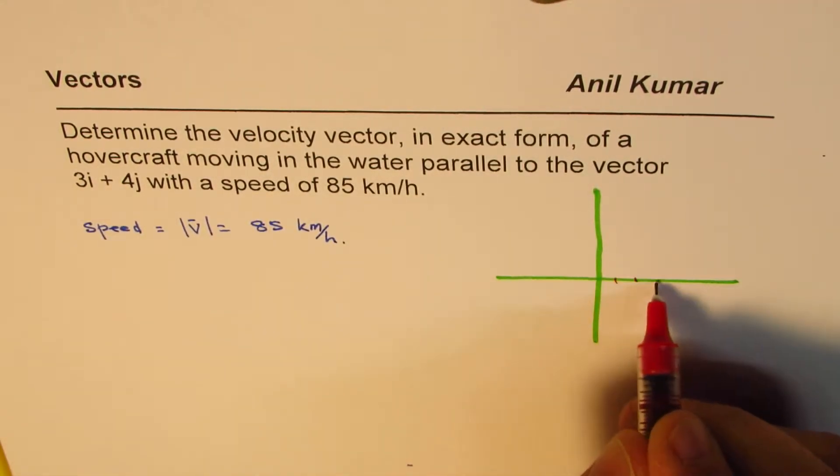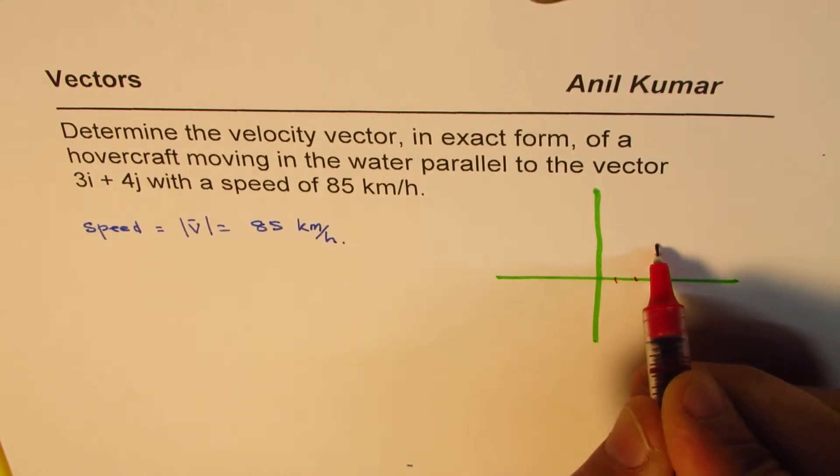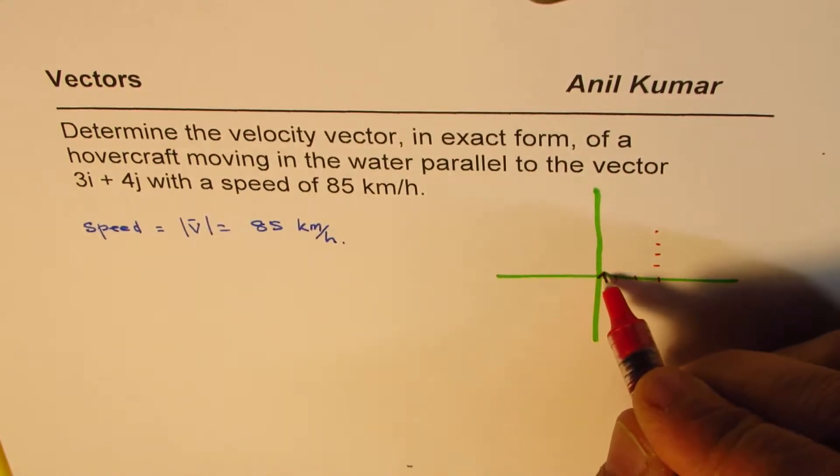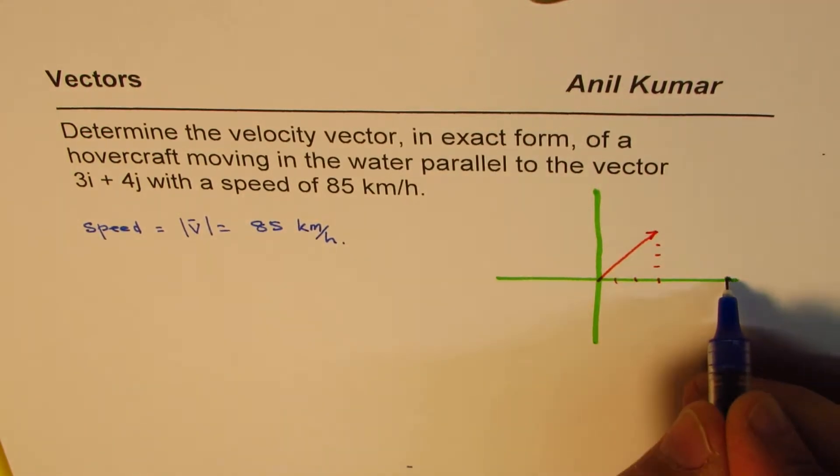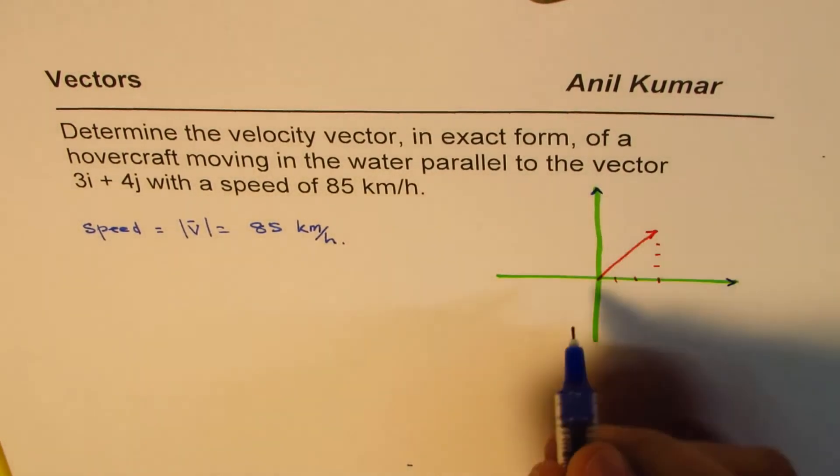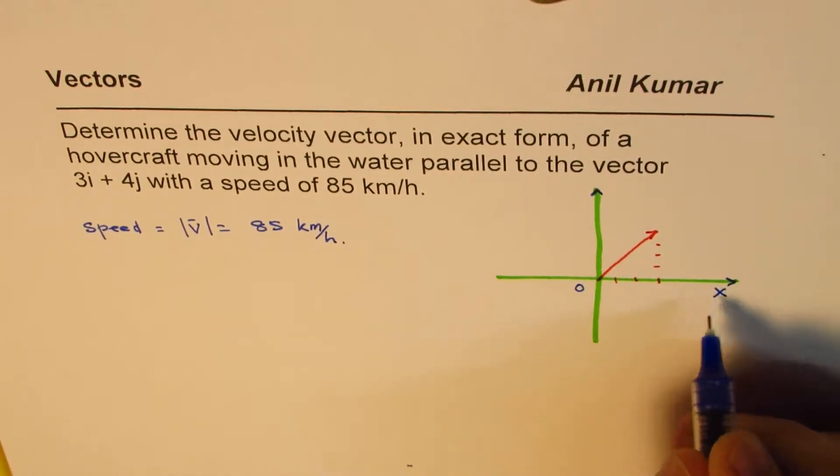So, let's set up the axes: 1, 2, 3, 1, 2, 3, 4. So, it is parallel to this vector, 3i4j. The idea of discussing the test paper here is to understand the concepts as we move along.